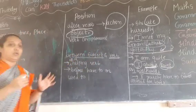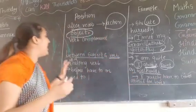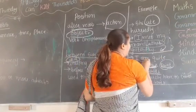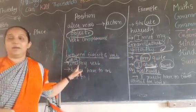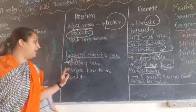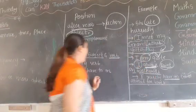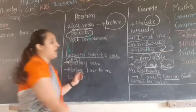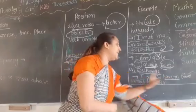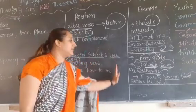If helping verbs like 'is,' 'am,' 'are,' 'was,' or 'were' are given, you can place the adverb after the helping verb. For example: 'I am quiet.' 'Am' is the helping verb, so the adverb comes after it. Additionally, if 'have to' or 'used to' is in the sentence, the adverb will come before them.